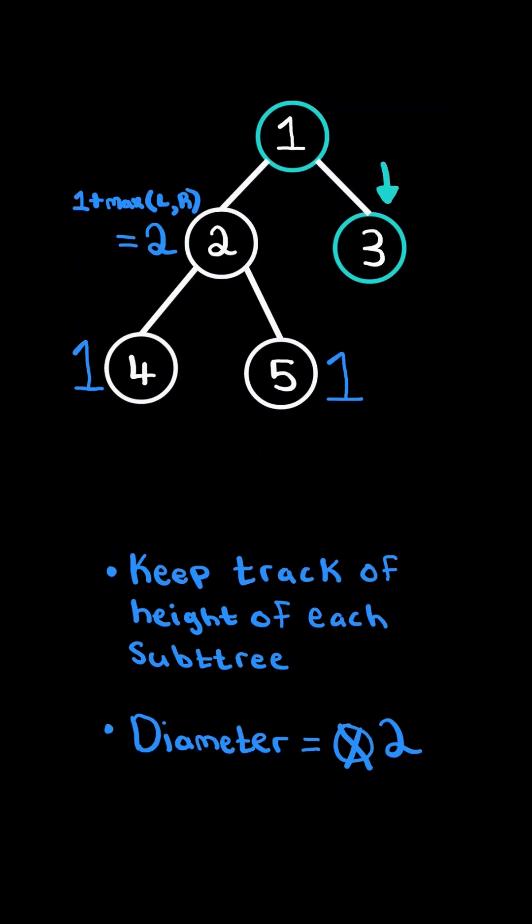Now let's consider the recursive step on node 3. It has no left or right subtree, and therefore there is no diameter on this subtree, and so all we do is return the height of its subtree, which is 1.